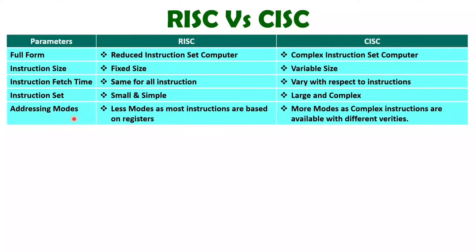When we talk about addressing modes, then with RISC architecture, you will be having less addressing modes. The reason is the majority of instructions are based on registers. In its chip area also, I have explained that with RISC architecture, you will be having many registers. The reason is we have a small number of instructions and those are simple, so the instruction decode circuit will be small. That's why the larger area of chip is utilized by using registers in RISC architecture. But with CISC architecture, there will be many addressing modes, because we are having complex instructions, so varieties of addressing modes will be available with CISC architecture.